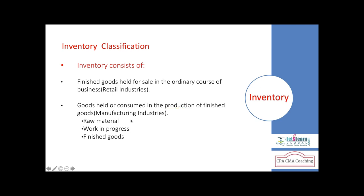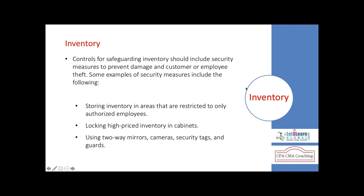Inventory can be in the form of raw materials — such as plywood in manufacturing or furniture companies — work in progress, which is semi-finished goods in some stage of becoming finished goods, and finished goods which are ready for sale. Whether in retail or manufacturing, we have raw materials, work in progress, and finished goods.